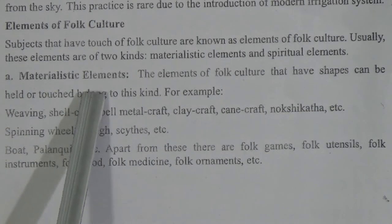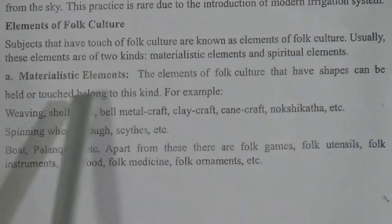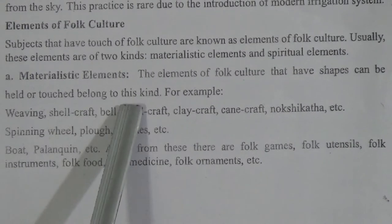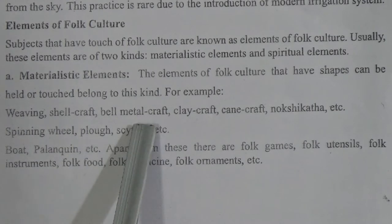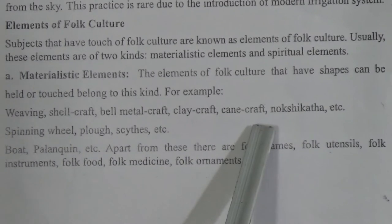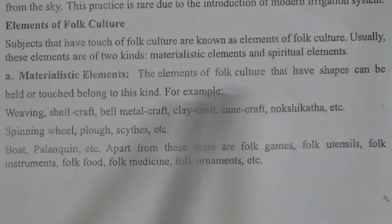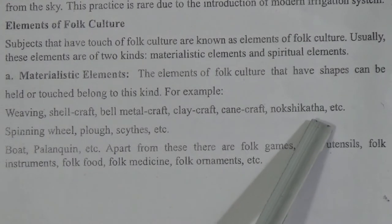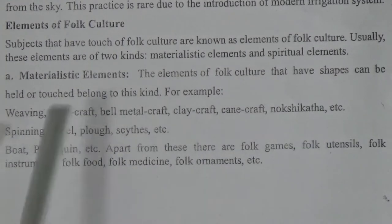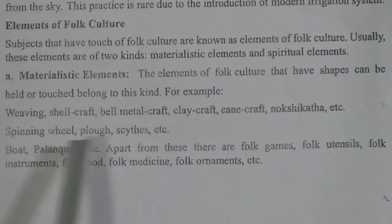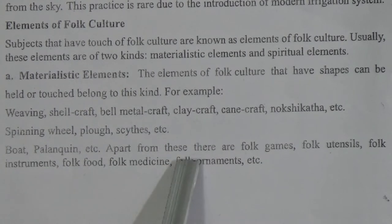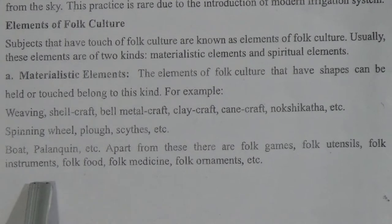Materialistic Elements: The elements of folk culture that have shapes and can be held or touched belong to this kind. For example, weaving, shell craft, metal craft, clay craft, can craft, noxikatha, etc. Other examples include spinning wheel, plough, boat, palanquin, etc. Apart from these, there are folk games, folk utensils, folk instruments, folk food, folk medicine, folk ornaments, etc.